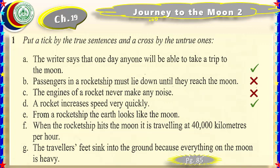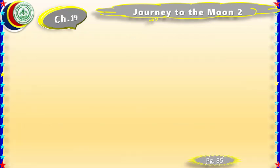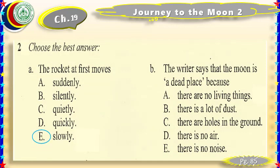Statement five: 'From a rocket ship, the earth looks like a moon.' Yes, it looks like a moon. Statement six: 'When the rocket ship hits the moon it is travelling 40,000 km per hour.' That is wrong — 40,000 km/h is its maximum speed, but when it lands on the moon it decreases speed; if it hit the moon at that speed it would crash. Statement seven: 'Travellers feel they sink into the ground because everything on the moon is heavy.' Not heavy — they sink because there is powder and dust. Statement eight: 'The rocket at first moves slowly.' Yes, at first it moves slowly but increases speed quickly. Statement nine: 'The writer says that the moon is a dead place because there are no living things — no animals, birds, trees, or anything.'